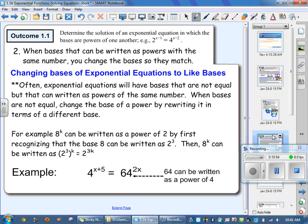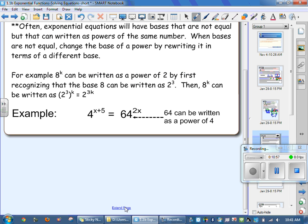For example, it tells us that 8 exponent k can be written as a power of 2. How? Because 8 itself is 2 cubed. So then I take 2 cubed times the k that's already out here as an exponent. And then you multiply this exponents doing the exponent rule. So now I'm going to have 2 to the exponent 3k.